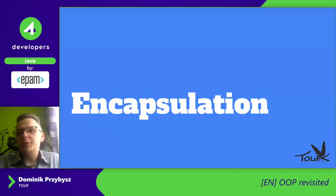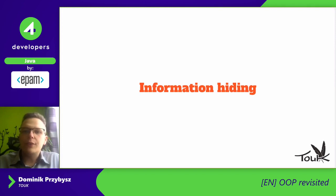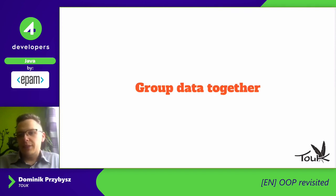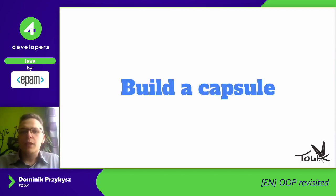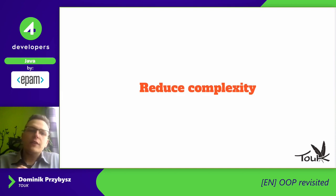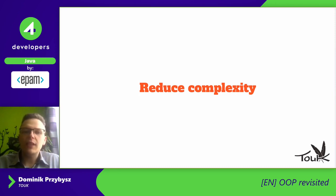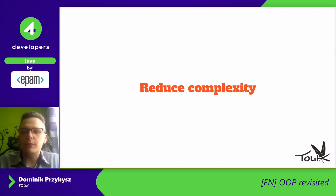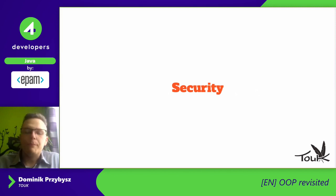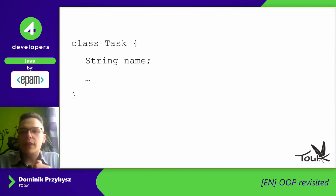Let's start with the first one: encapsulation. Encapsulation is a fancy word that we can translate as information hiding and grouping our data together. If you want to follow this principle, we should build a capsule inside our object. When we do so, we reduce the complexity of our system because it's hidden inside that object, and because you can only manage it via some interface, we gain security.